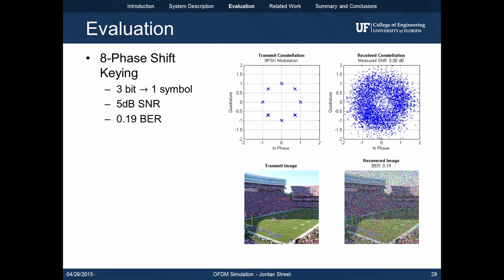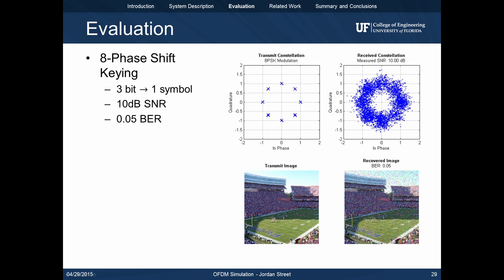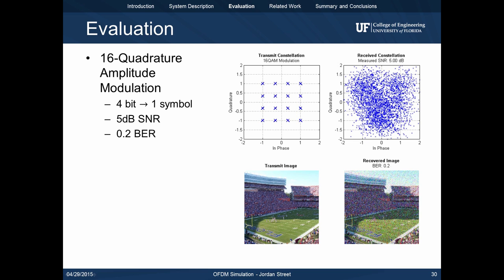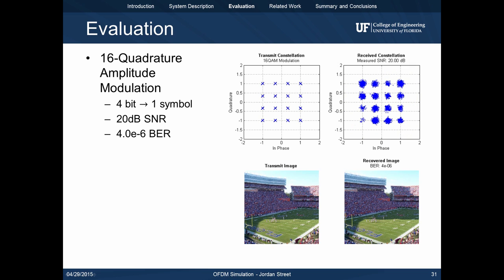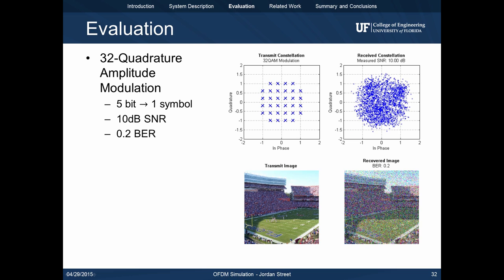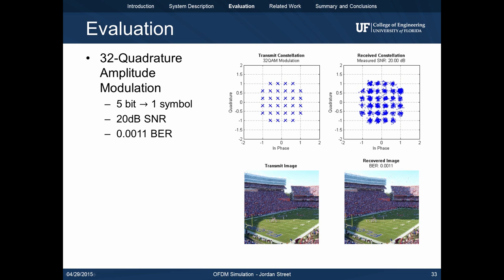8 phase shift keying expands QPSK by doubling the number of points along the unit circle. 8PSK maps three bits to one symbol. For 5dB SNR, we achieve a bit error rate of 19%. By increasing the SNR to 10dB, we can reduce the BER down to 5%. As we move to higher order modulation schemes, the pattern continues. For a fixed SNR, the higher order modulation has a larger BER. You can see this manifest in the transmitted and received images. These next charts demonstrate 16, 32, and 64 quadrature amplitude modulation. As the modulation order increases, the constellation becomes more dense and a higher SNR is needed to preserve the bit error rates.